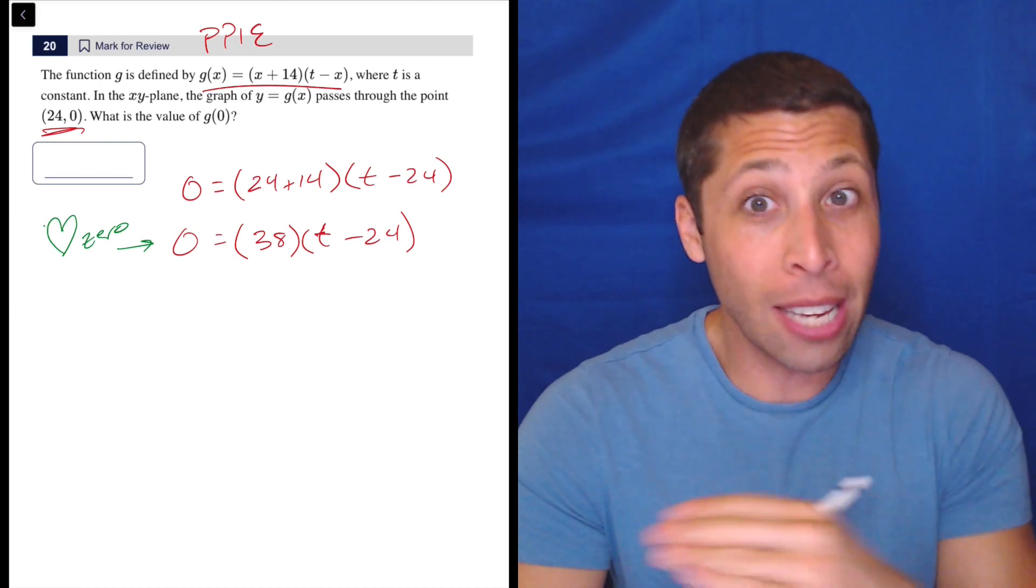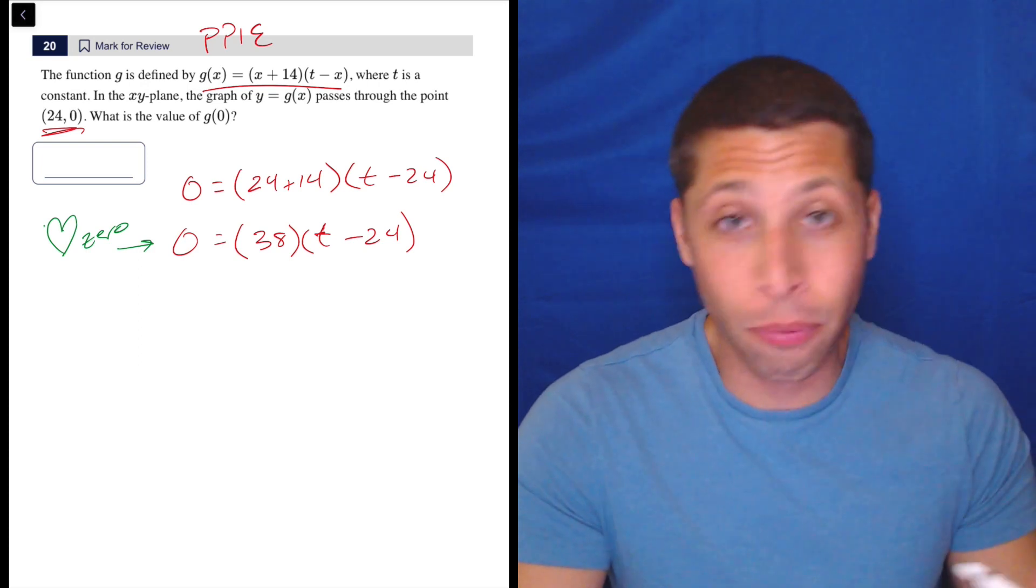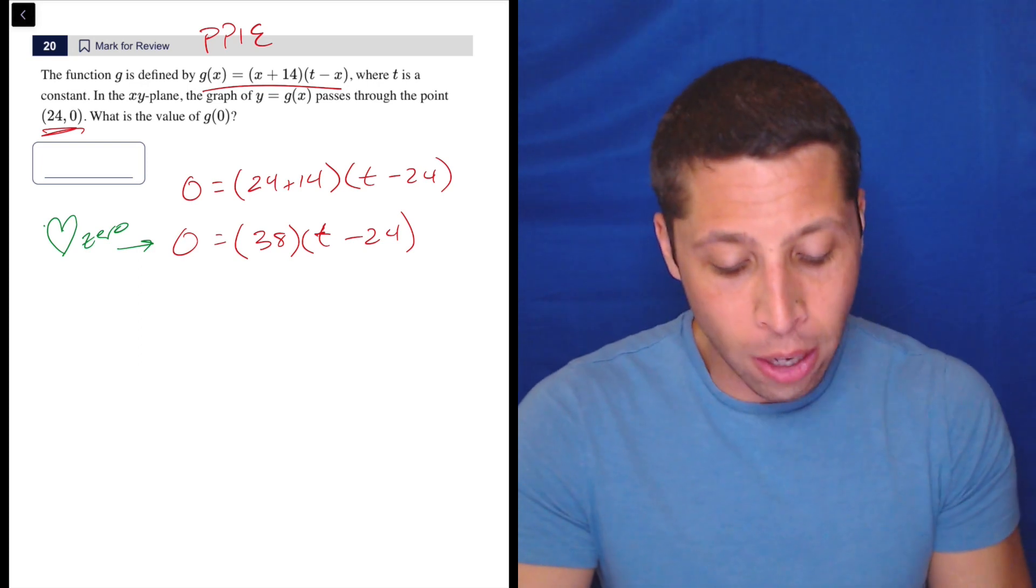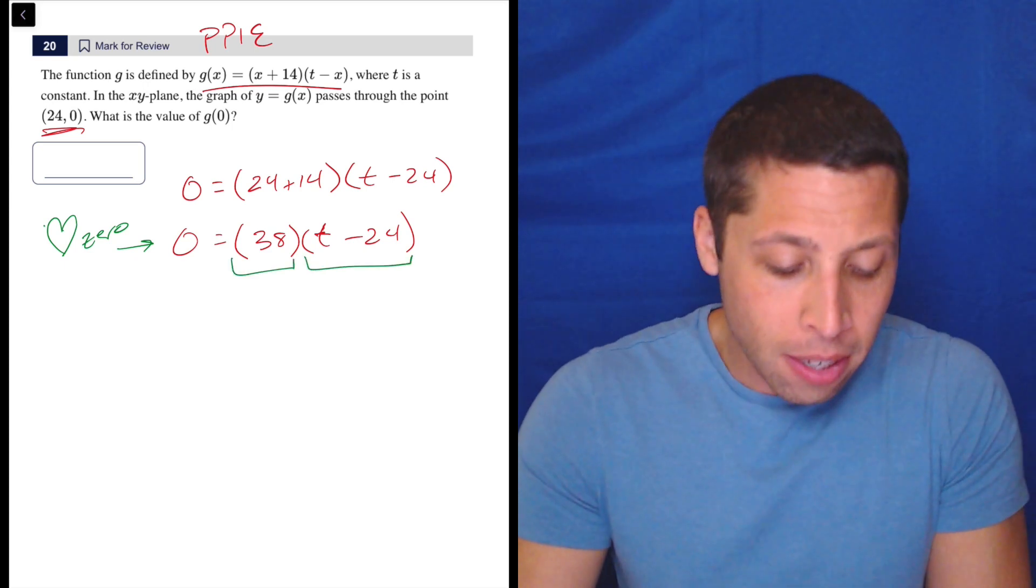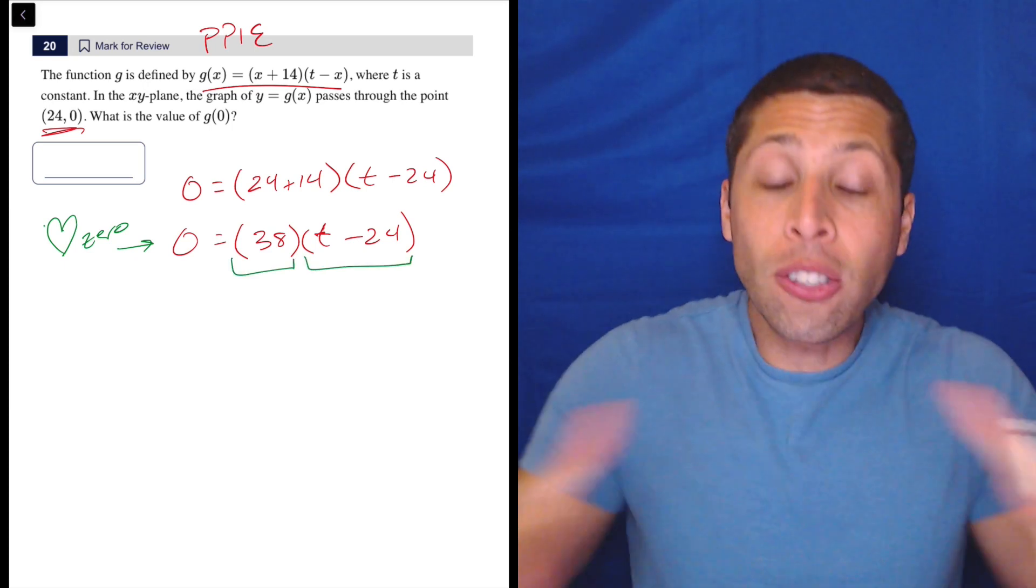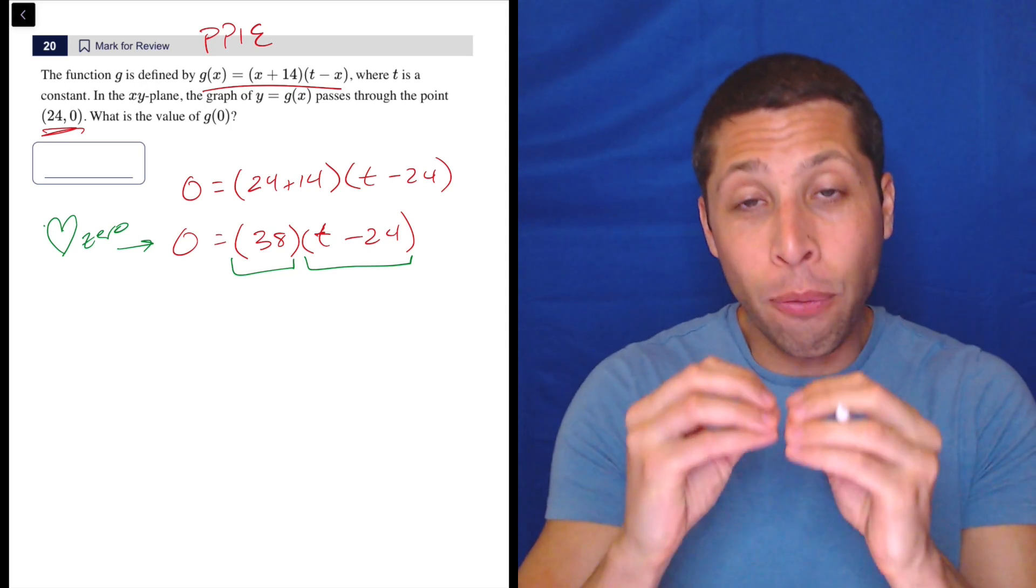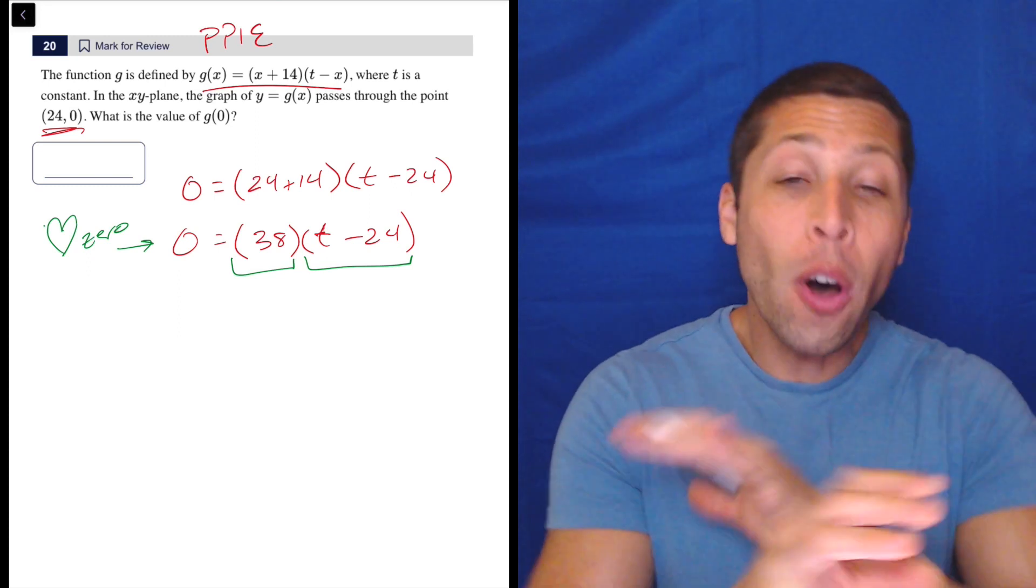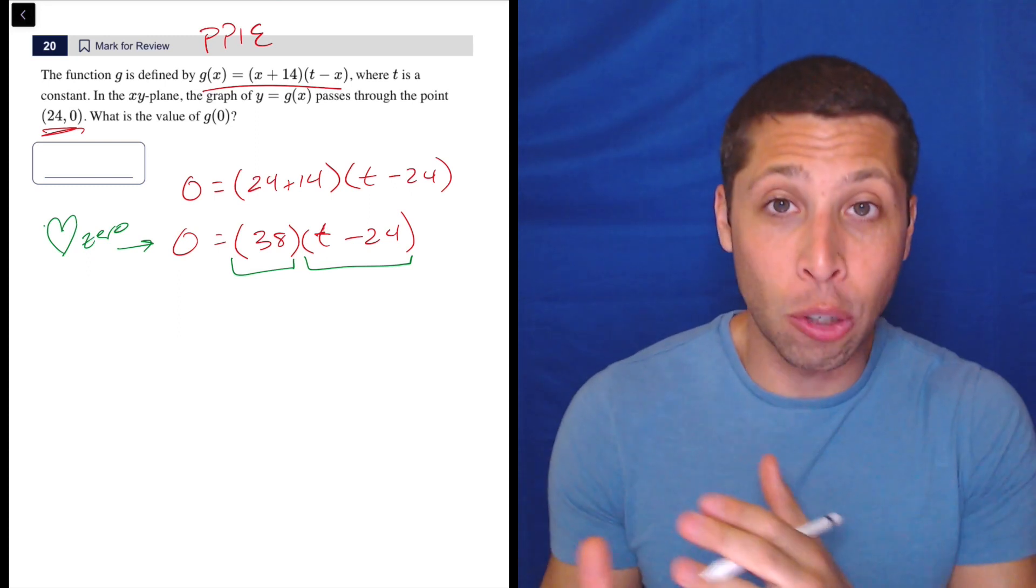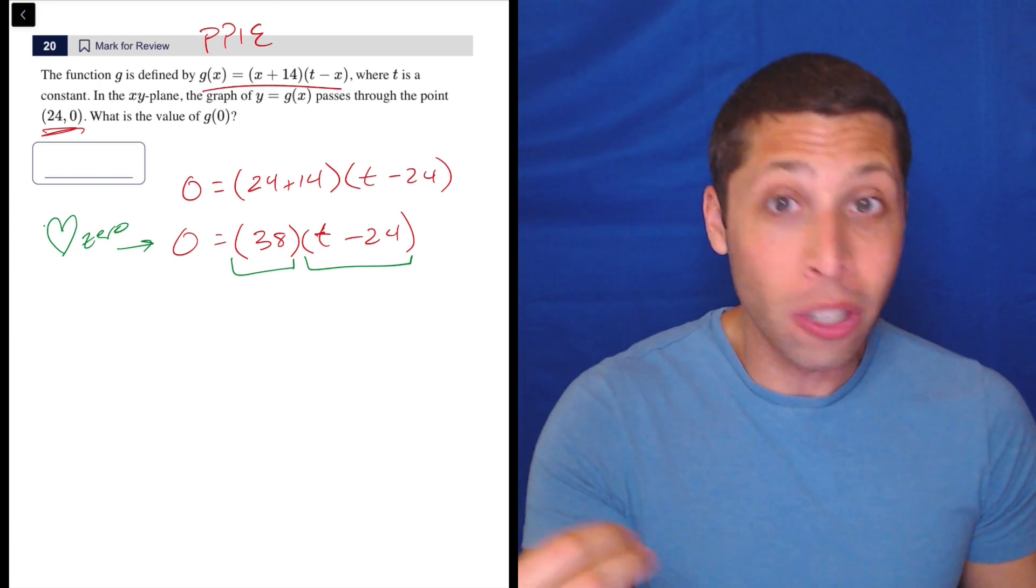Making this equal to zero is what makes this question solvable in a few seconds. Because rather than foiling everything out, we can look at this and say, the reason zero is so important is that each of these factors is its own little world, its own little equation. And because if one of those factors is equal to zero, then the whole equation is equal to zero, we can treat them as individuals. And the reason for that is, anything times zero is equal to zero.